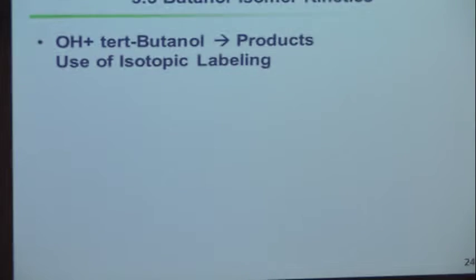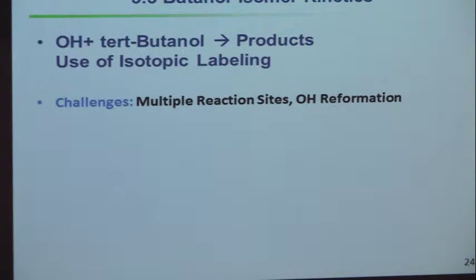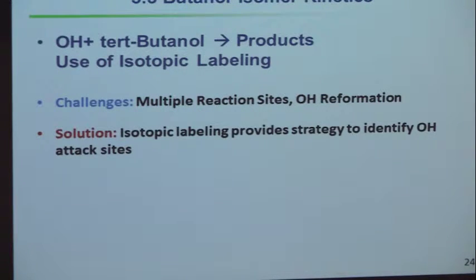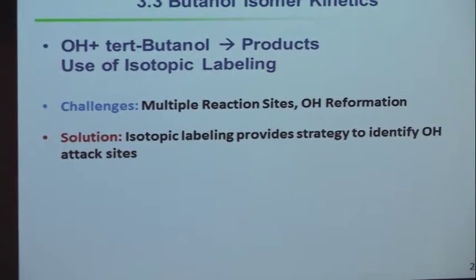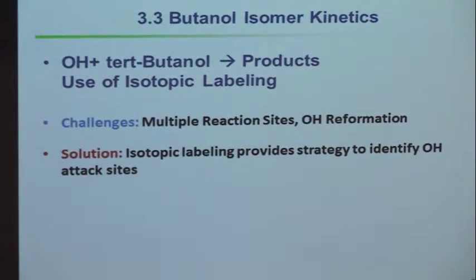We came up with a solution using isotopic labeling — though we were not actually the very first to do this; I believe they did it first at Argonne. The challenge is that there are multiple reaction sites on tert-butanol, and I'm going to show you how we used isotopic labeling. It's very expensive — we had to buy the labeled compound for about $7,000 for a small sample.